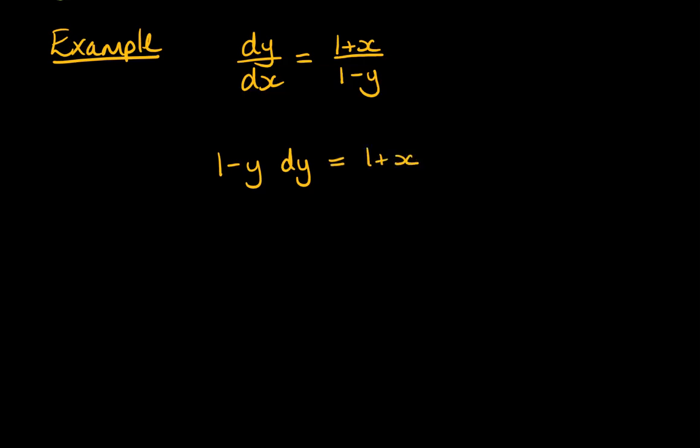Leave 1 plus x where it is, and bring the dx over here. So kind of like we're multiplying both sides by 1 minus y, and we're also multiplying both sides by dx.